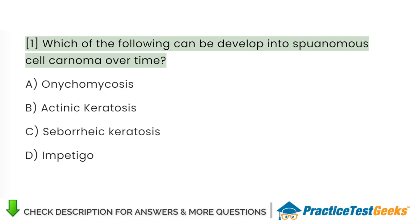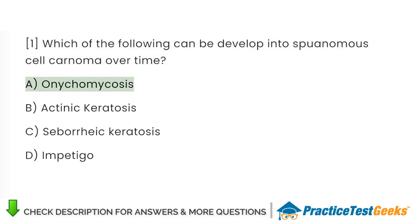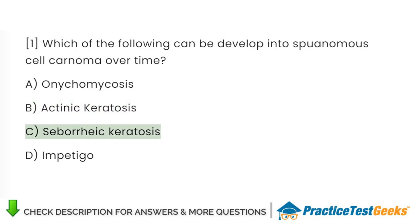Which of the following can be developed into squamous cell carcinoma over time? A. Onychomycosis. B. Actinic keratosis. C. Seborrheic keratosis. D. Impetigo.